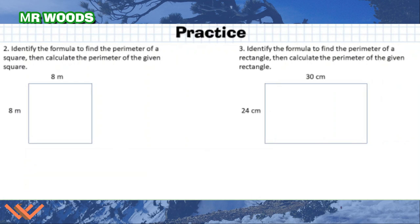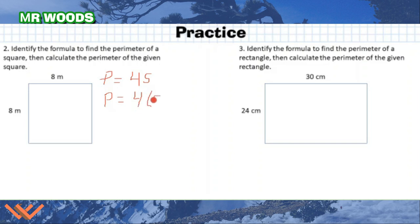Now I want you to practice this. Remember what I was talking about with a square versus a rectangle — it's a little different, but gives you the same results. Pause the video and work this out, then come back to check your answer. Welcome back. The problem says identify the formula to find the perimeter of a square. We have a square where all sides are 8 meters. I said in a previous slide that perimeter is equal to 4s, where s is the side length. So P equals 4 times 8 meters, and 4 times 8 is equal to 32 meters. We can add it up: 8 plus 8 is 16, plus 8 is 24, plus 8 more is 32.